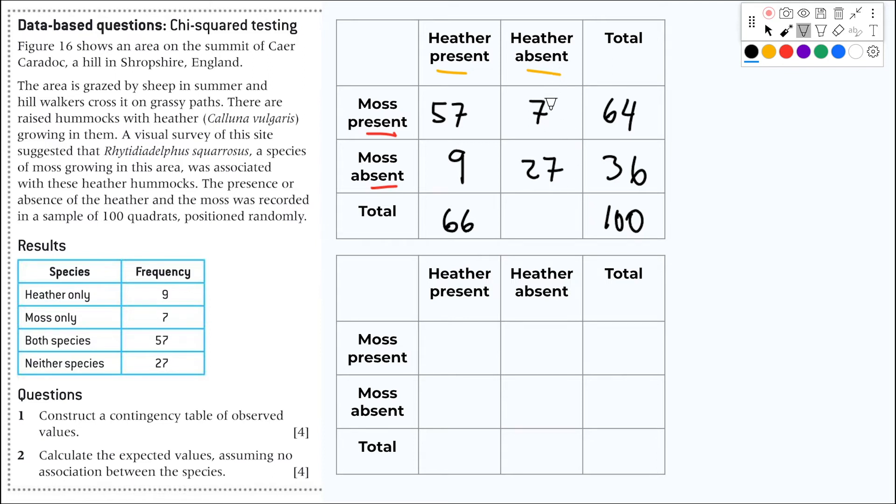And here the total number of quadrants without heather will be 7 plus 27, that is 34. And if we add them together here, we also get 100, as it should be, because that's the number of quadrants we had in the first place. So it should be the same number here. You do this, that alone will give you four marks. Easy.